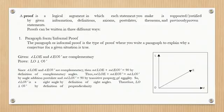The paragraph form is the type of proof where you write a paragraph to explain why a conjecture for a given situation is true. Given that angle LOE and angle EOV are complementary, prove that LO is perpendicular to OV. Since angle LOE and angle EOV are complementary, then the measurement of angle LOE plus the measurement of angle EOV equals 90 degrees, by the definition of complementary angles. Thus, the measurement of angle LOE plus the measurement of angle EOV equals the measurement of angle LOV, by the angle addition postulate.